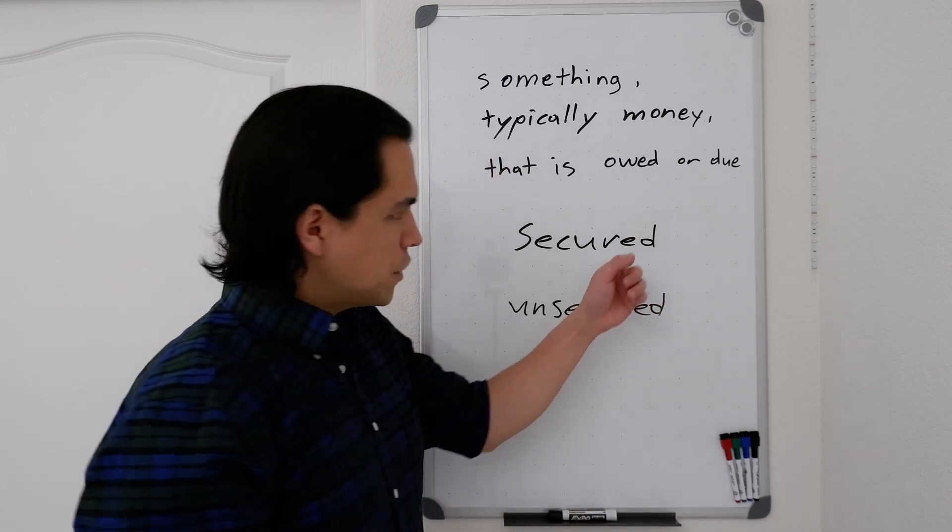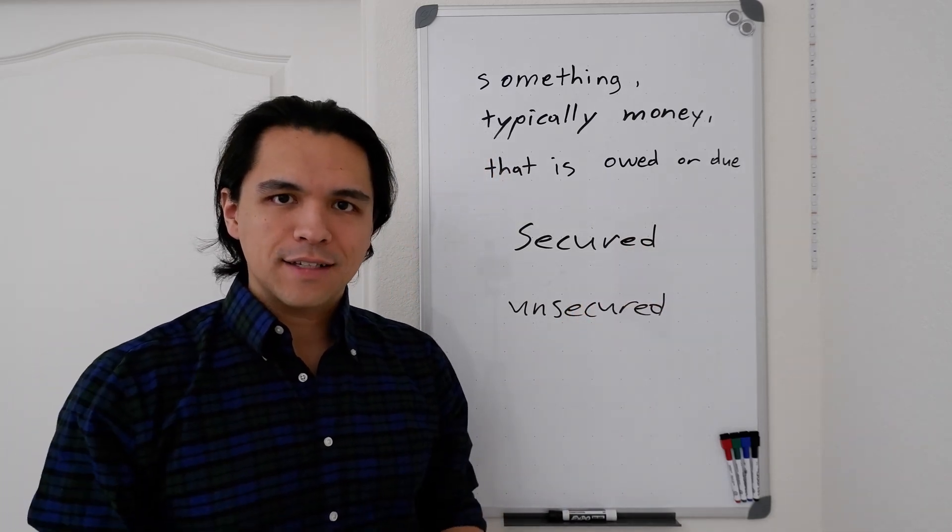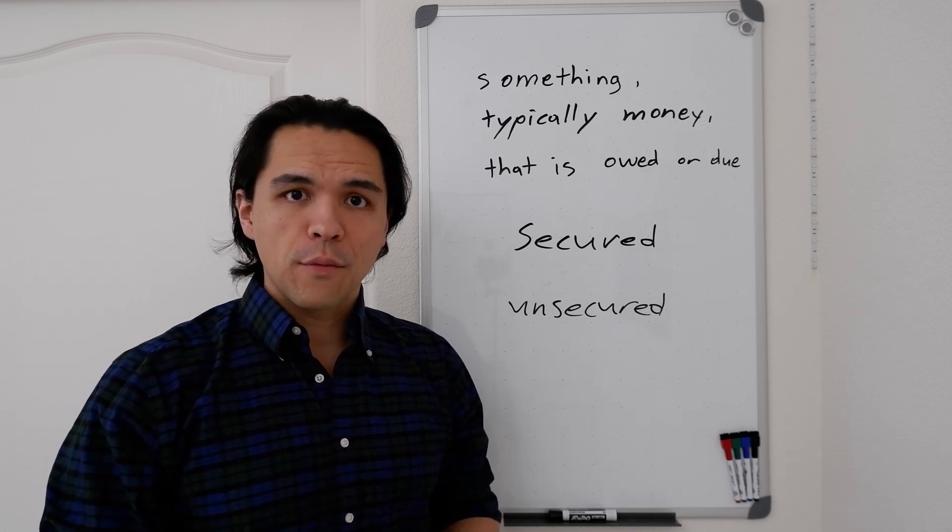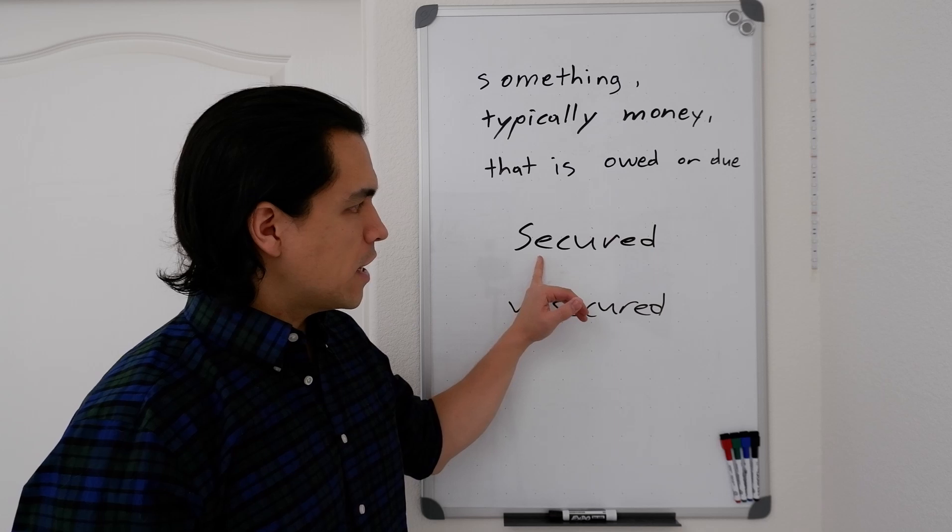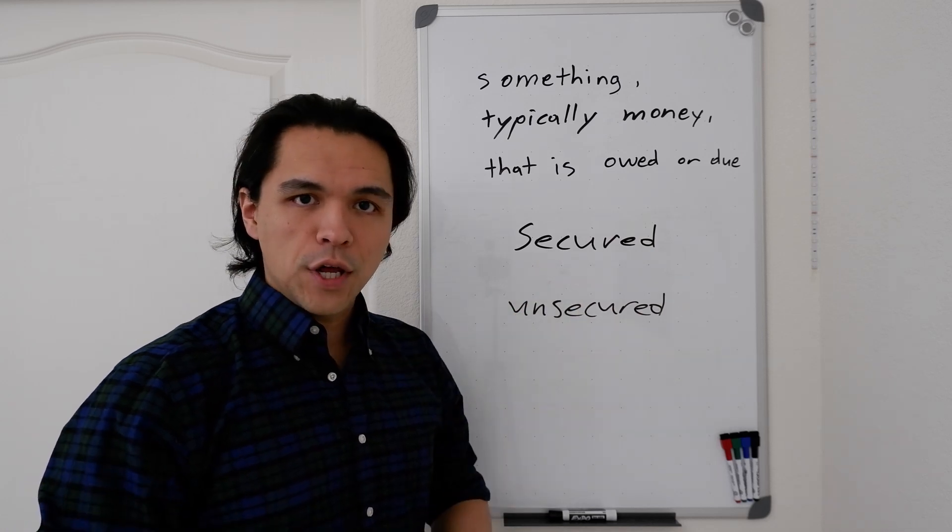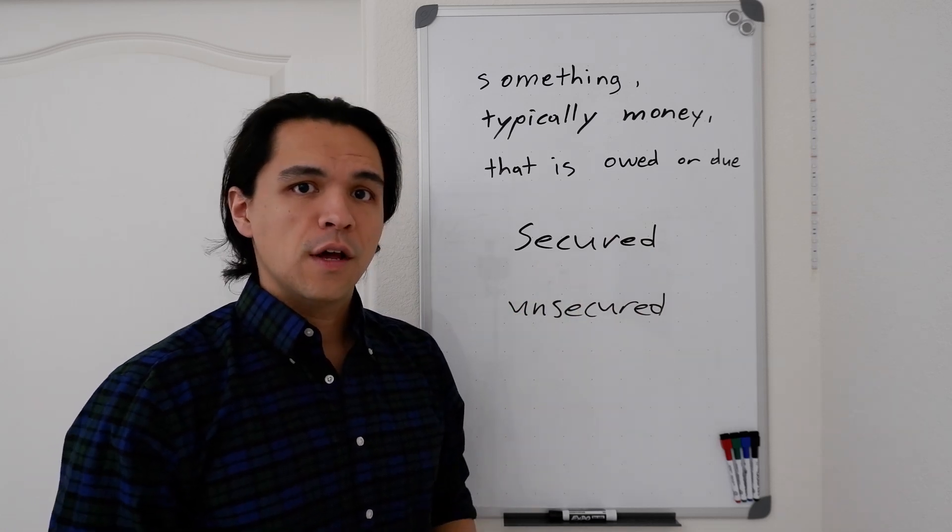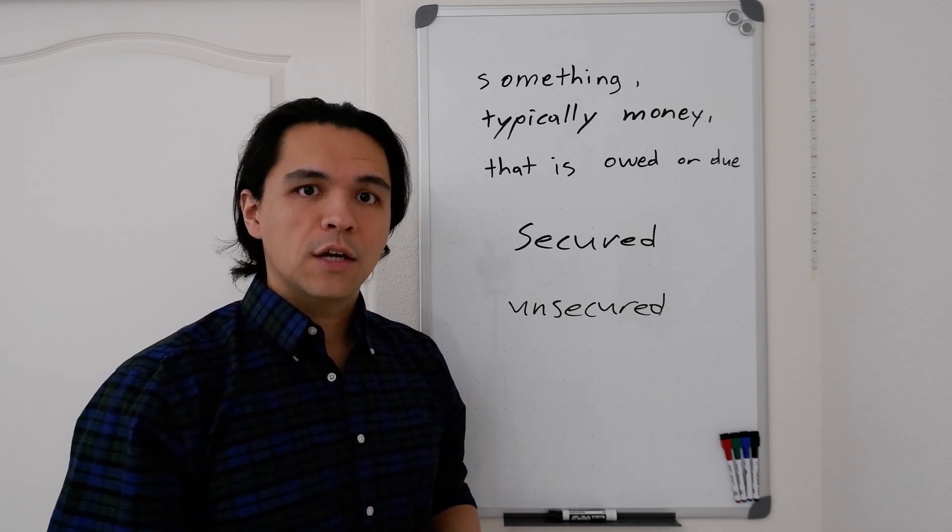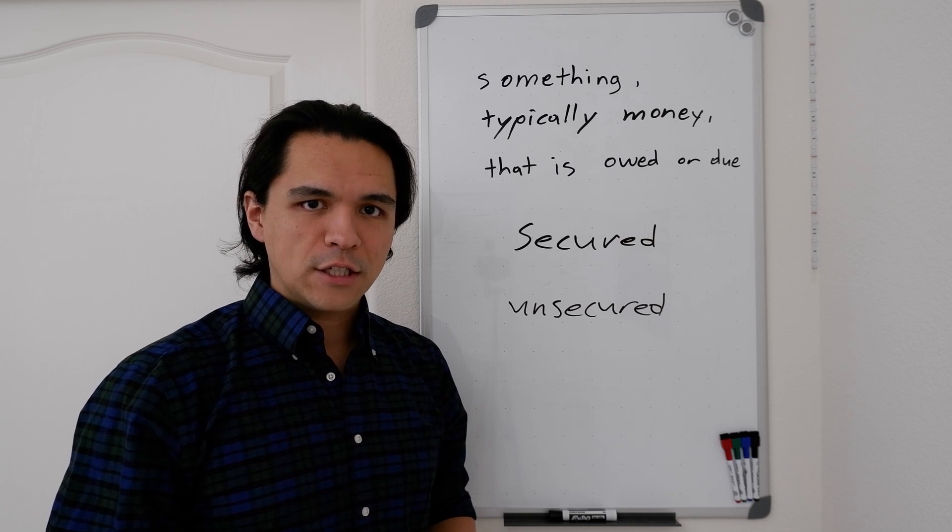A secured debt has some kind of asset tied to it. So if you think about your home, if you have a mortgage, your home is securing that loan. If you default on the loan, then your home is what's going to be taken back by the bank. It'll be foreclosed in order to repay that obligation.